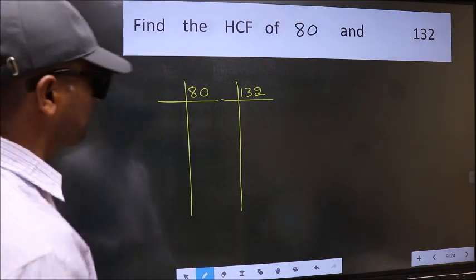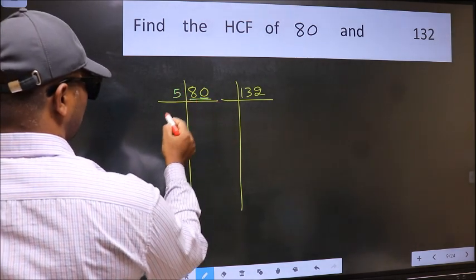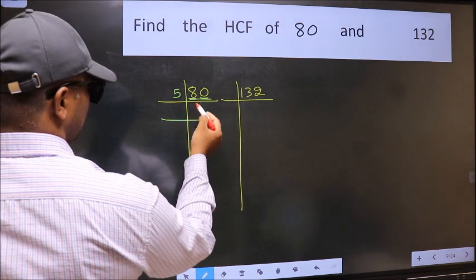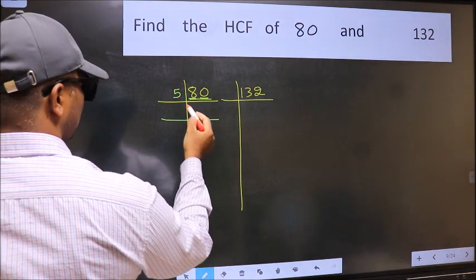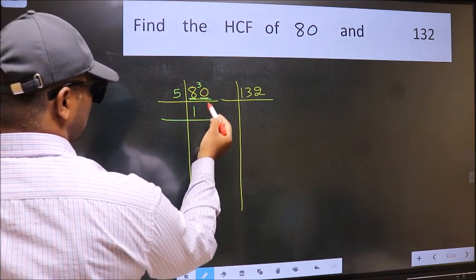Next, in this number, last digit 0, so take 5. First number 8. A number close to 8 in 5 table is 5 once 5. 8 minus 5, 3, carried forward 30.